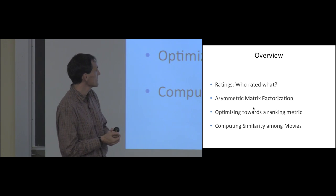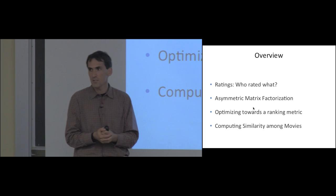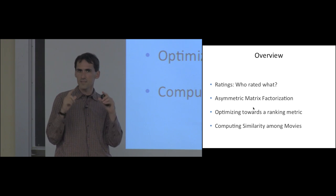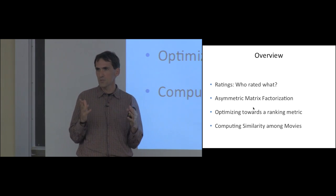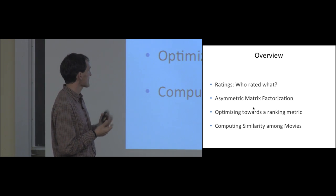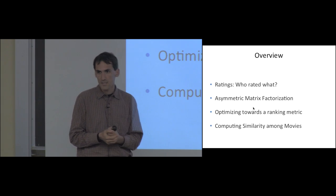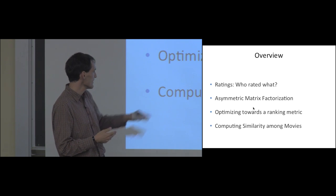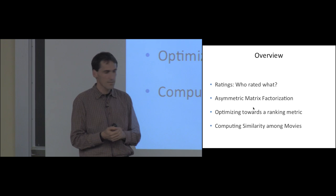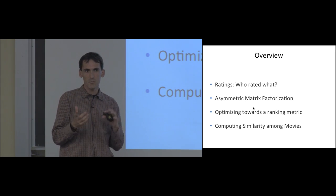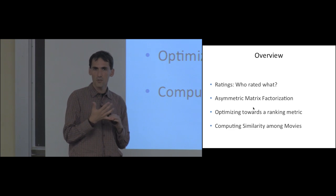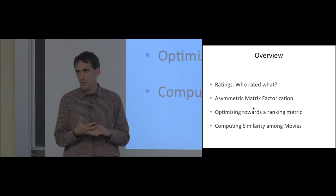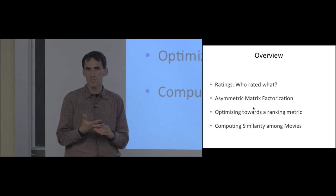I want to review the asymmetric matrix factorization — a nice way of dealing with the fact that the rating matrix concerning users and movies is a very long and thin matrix, meaning we have many more users than we have movies. Then I want to talk about optimizing towards a ranking metric, since often people optimize towards the least squared error. Finally, I want to talk about computing similarity among movies — removing the popularity component and looking only at similarities.